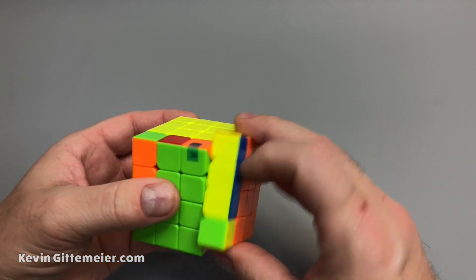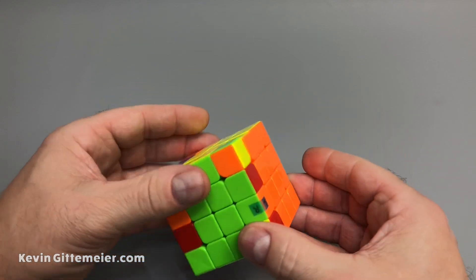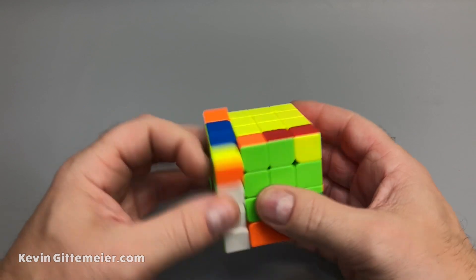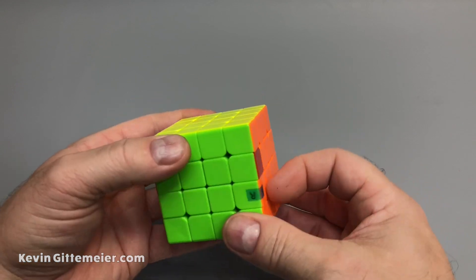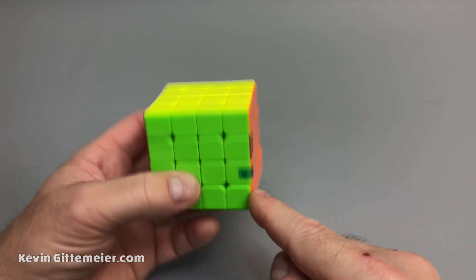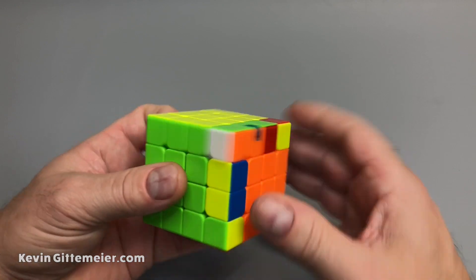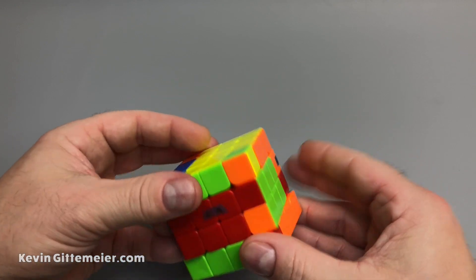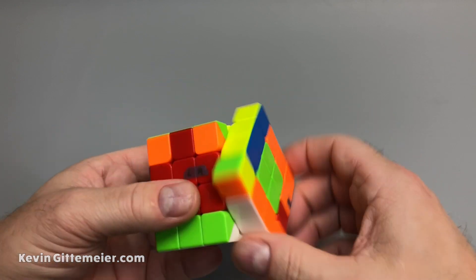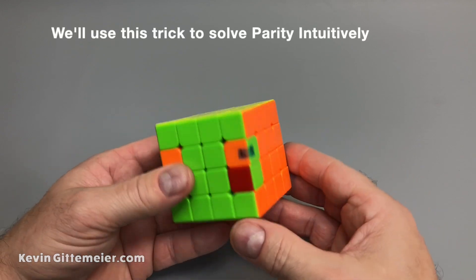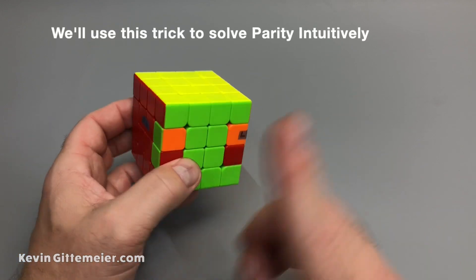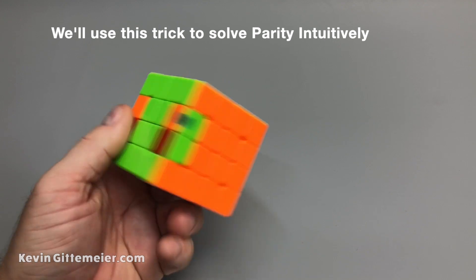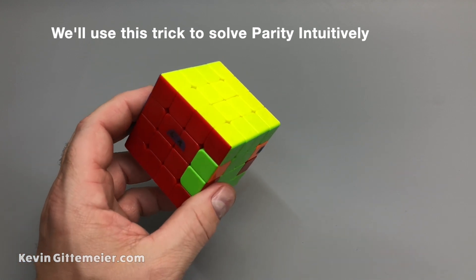So for example, I could do the same thing here. Move the center. And then I just flipped those. So I'll flip them both back. All right, we're going to use that principle a lot more, especially when we solve parity intuitively.